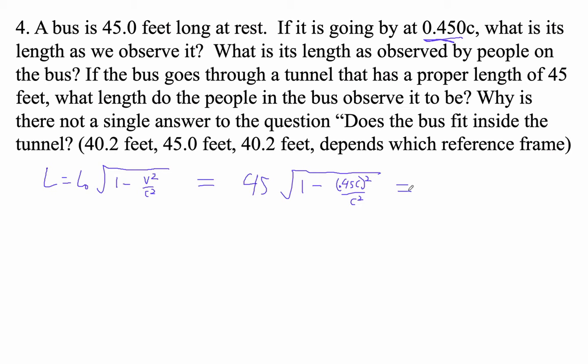So 45 times the square root of 1 minus 0.45 squared is going to be 40.2 meters long, basically, or 40.2 feet, sorry. Because these were feet to begin with, right?